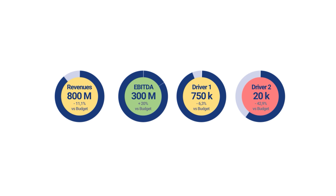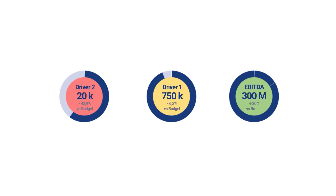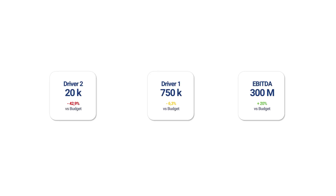Here's how to make a gauge chart look clean. Use a donut setup and reduce it to three segments: red, yellow, and green. Keep it minimal — you don't need fancy needles or shadows. In the center, put the KPI in a big bold number, and just below it, the variance versus the target. Sometimes you don't even need a gauge at all — just write the number large, add versus budget below, and it will be even clearer. Simple beats spectacular.